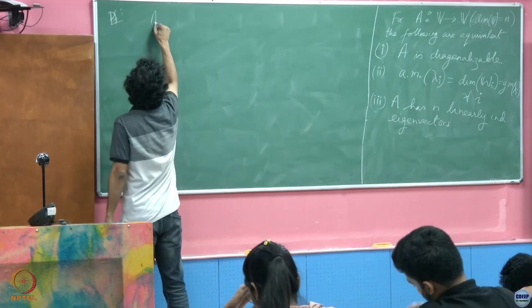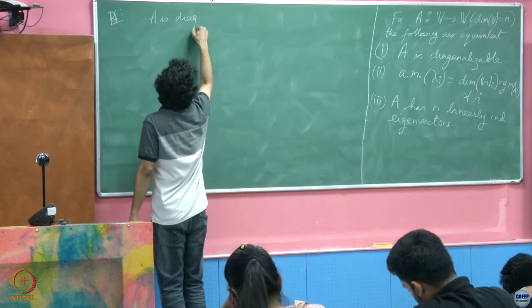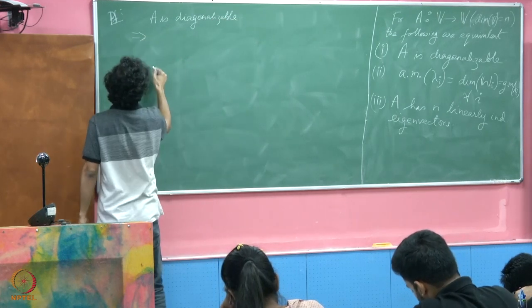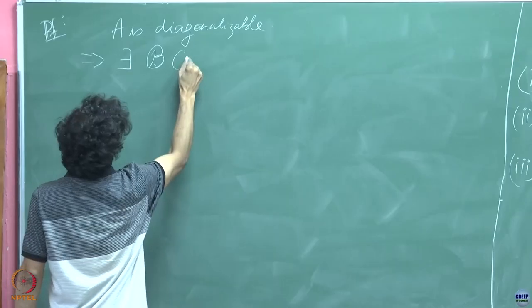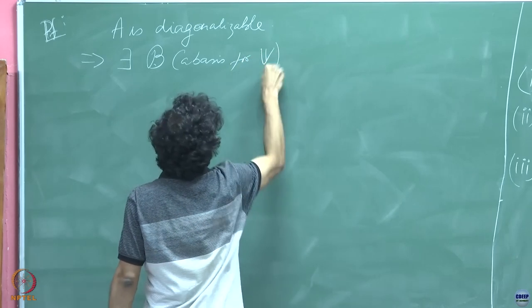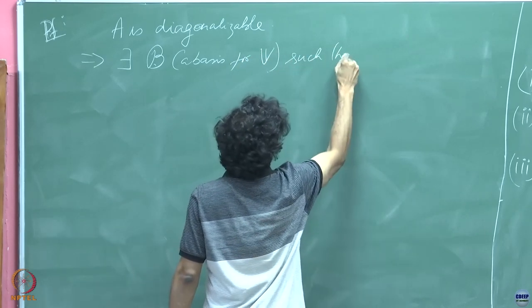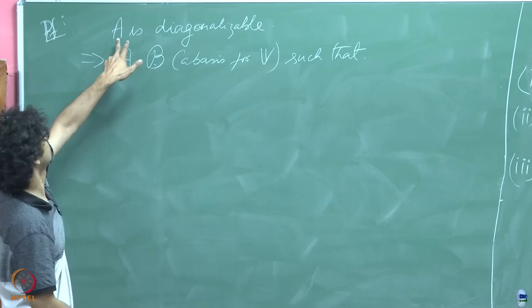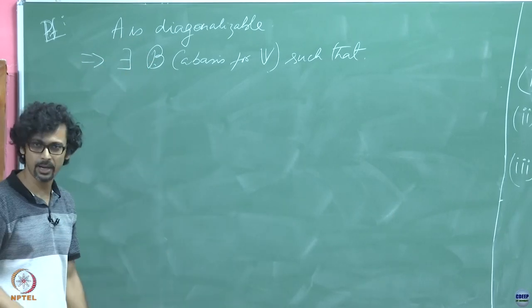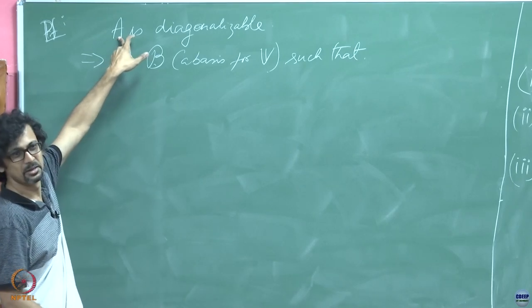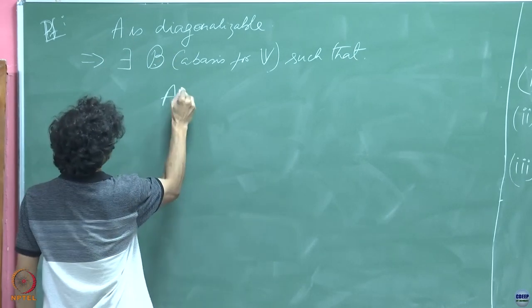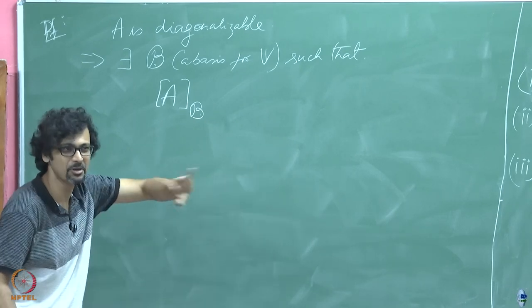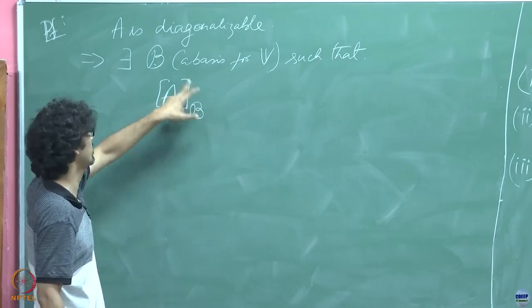A is diagonalizable implies there exists a basis for V such that A, represented in terms of that basis, becomes a matrix. I am going to use the hybrid notation - you might think A was a matrix, but let us just say A is the operator. Then A represented in terms of the basis, which then becomes a matrix - I know it is a bit confusing, but I just want to avoid writing phi every time.